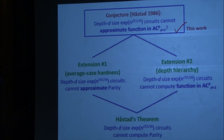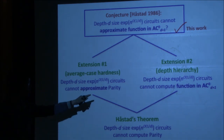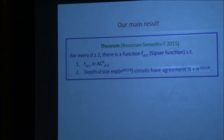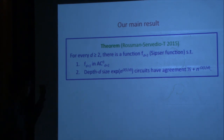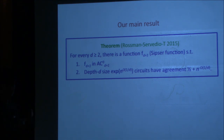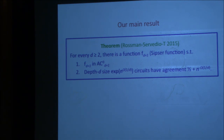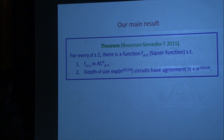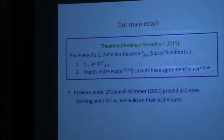Our main result states that for every depth d greater than 2, there's a function F_{d+1} — basically the Sipser function, slightly changed for technical reasons — such that F_{d+1} lives in depth-(d+1) AC0, but if you force depth d, even with size 2 to the n to the 1 over d, not only can you not compute it, you cannot even approximate it to 51% accuracy. The correlation is less than half plus 1 over poly n. The previous work is by O'Donnell and Wimmer who proved the depth-2 case: they give a depth-3 circuit of linear size such that any depth-2 circuit (any DNF or CNF) approximating it must have exponential size.